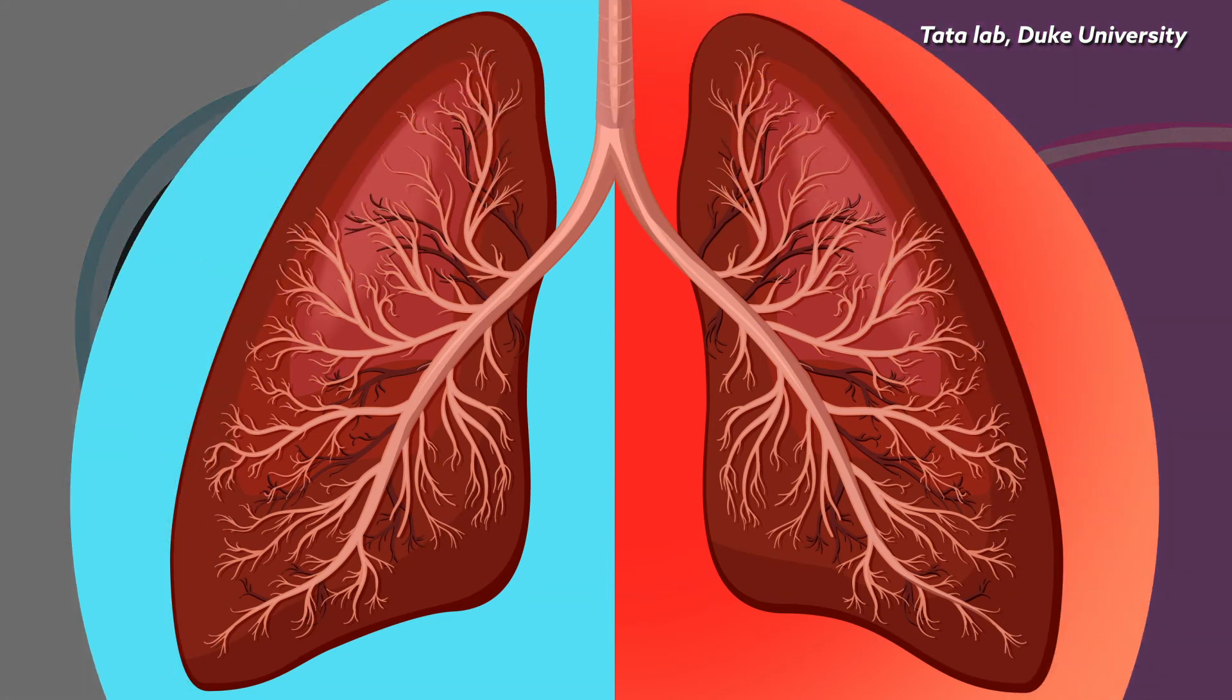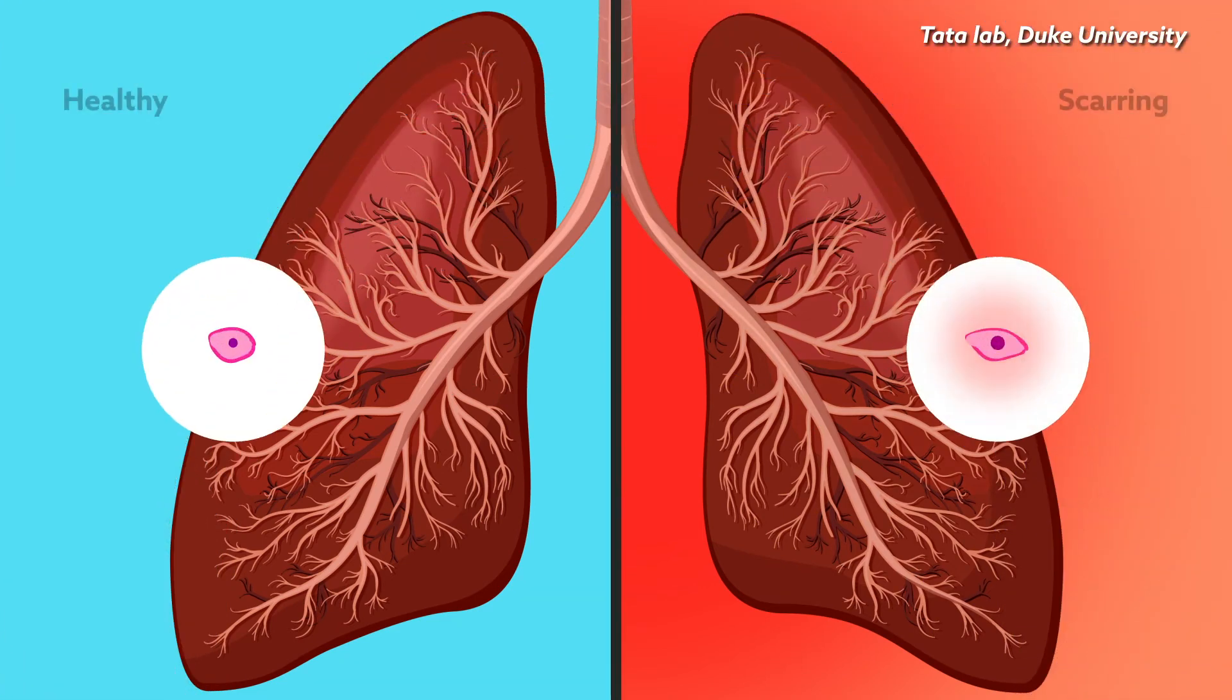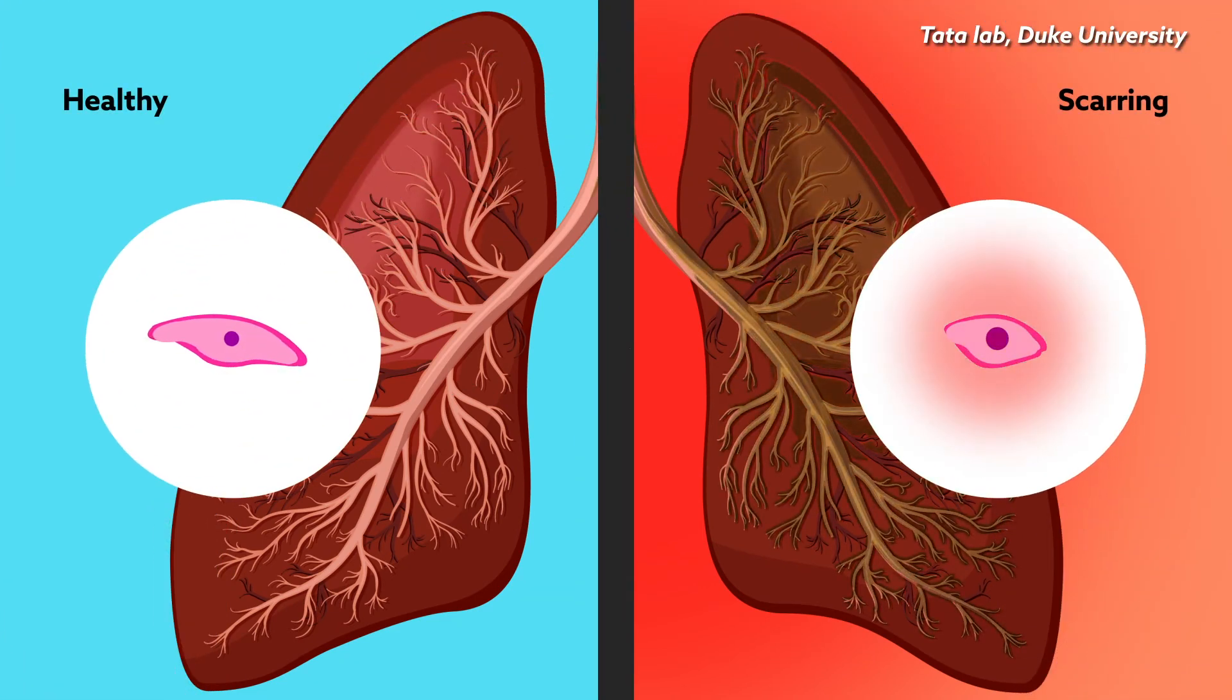Cells normally pass through the transition within days, but under certain conditions, stem cells can become locked in the transition state, leading to lung scarring.